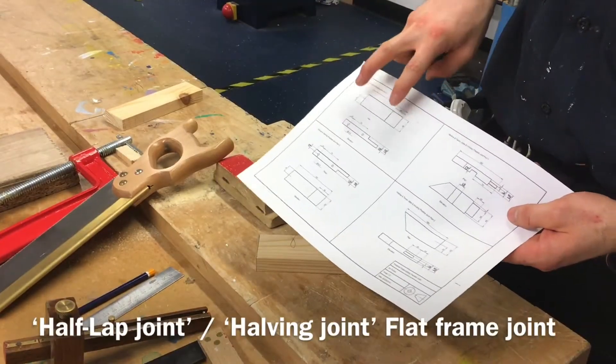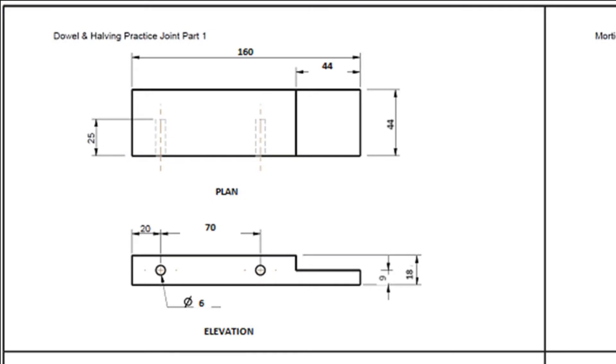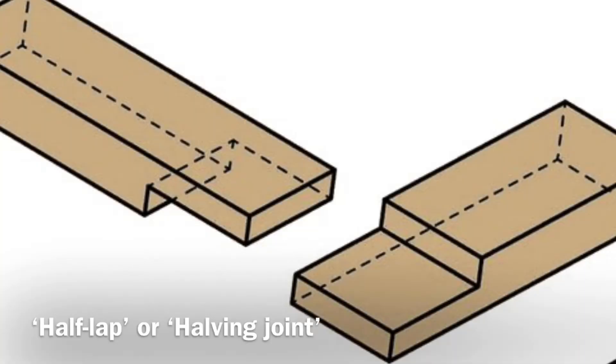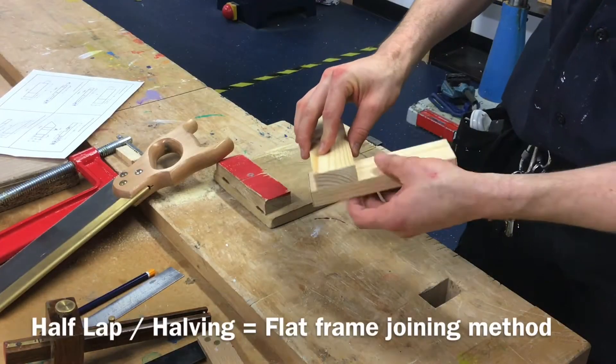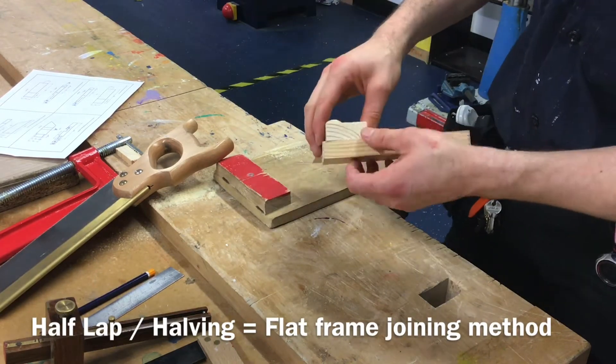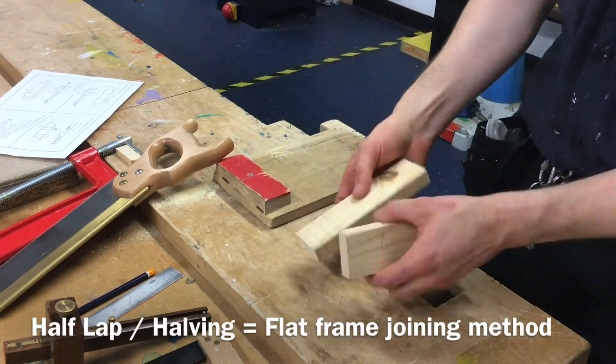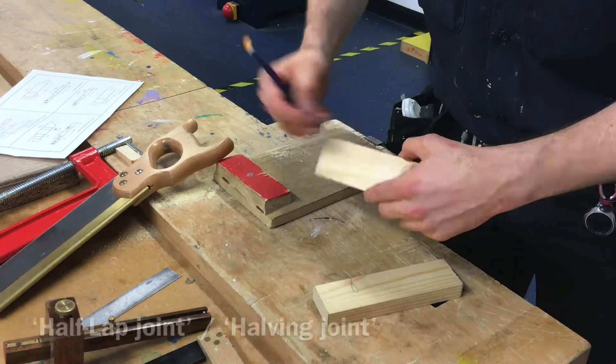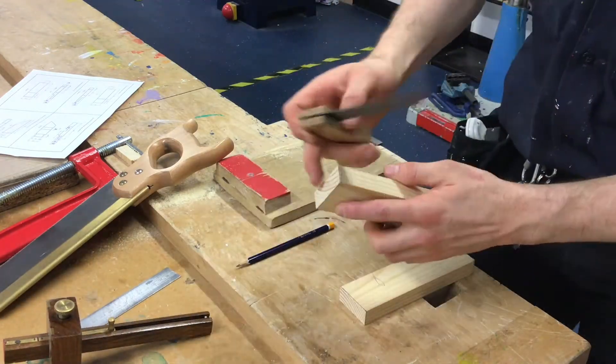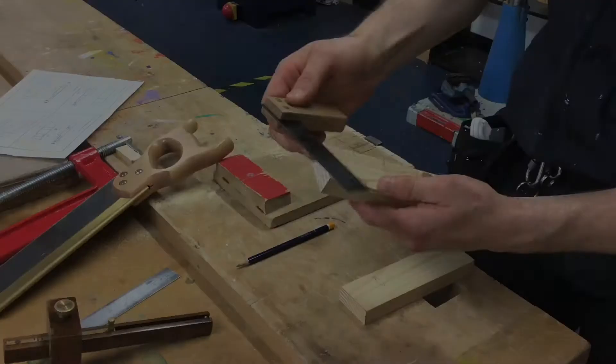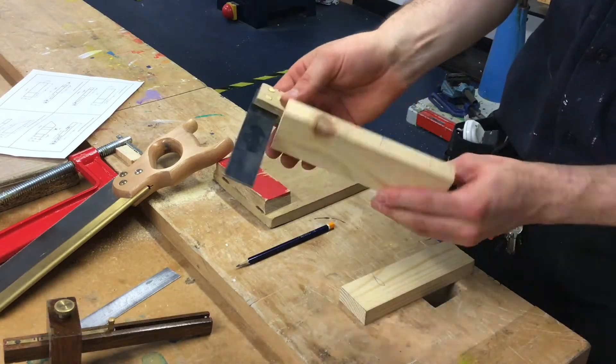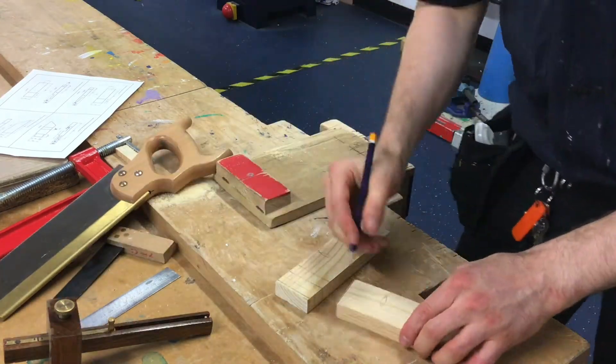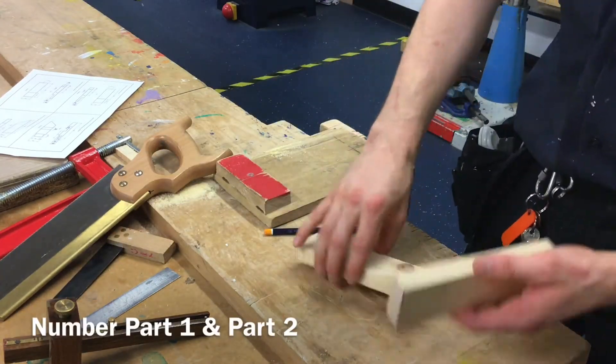I'm just going to mark out the first one which is a basic lap joint. Your half lap joint is a flat frame construction joint known as a half lap joint or a halving joint at the corners. I've checked the material has got facing edge on it. The end grain has been squared. I'm going to number them - part one and part two.